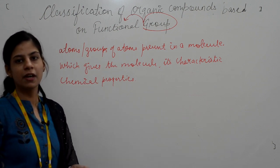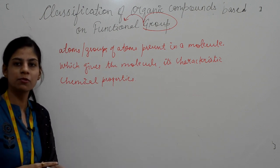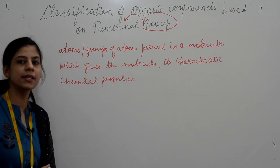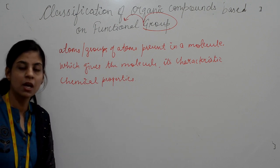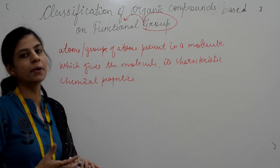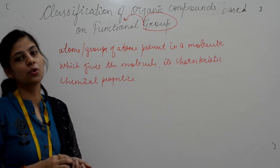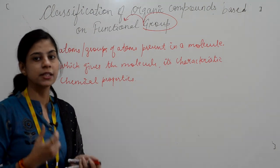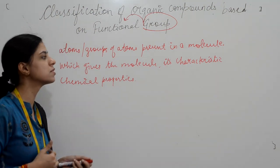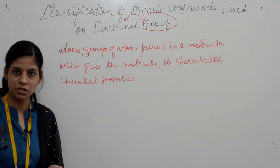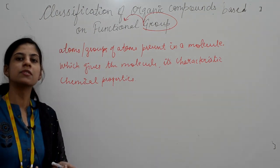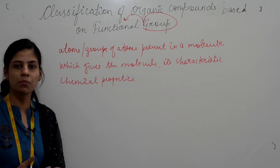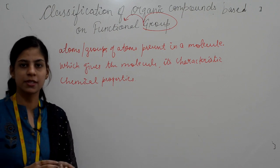As we are aware, there are two types of properties: physical properties and chemical properties. Physical properties of a substance are those in which the identity of the substance is not changed. Examples are color, density, melting point, boiling point, etc.